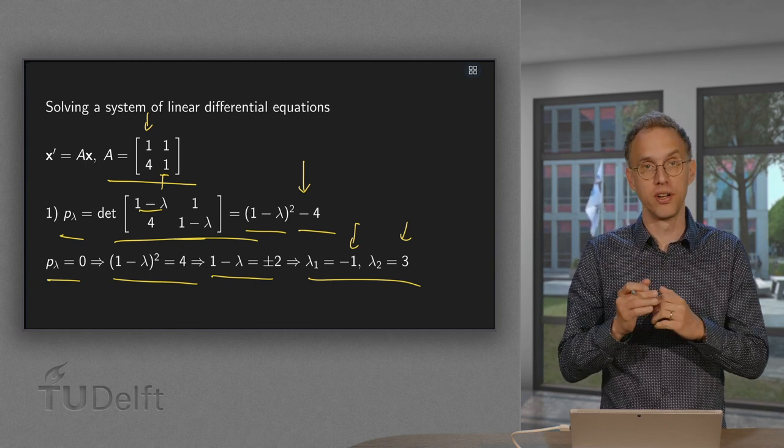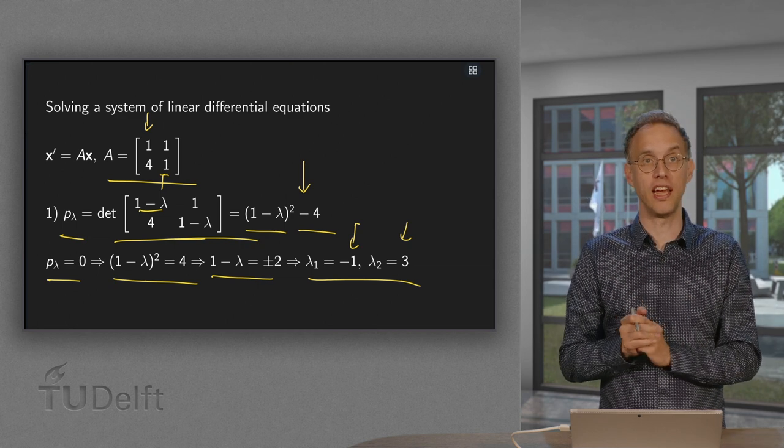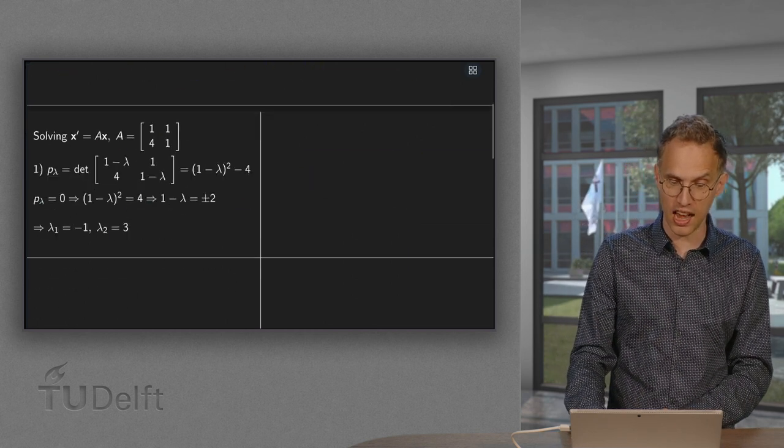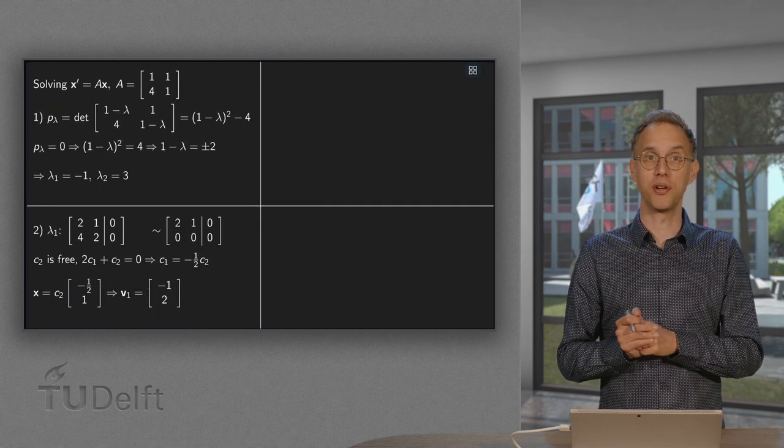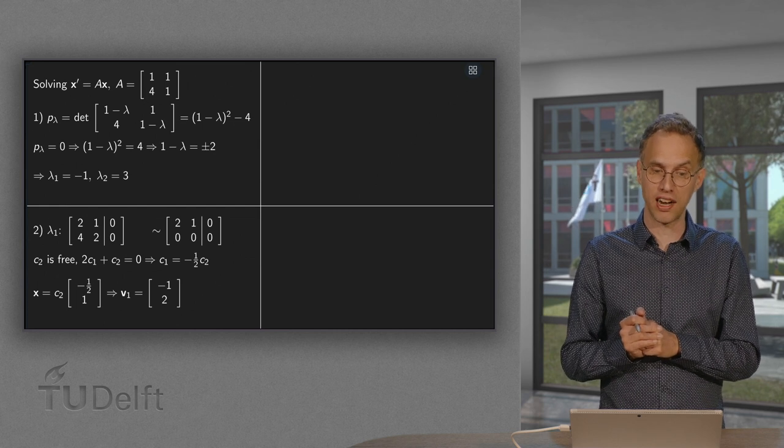And if your sum of your eigenvalues is not equal to the trace of A, you have made a mistake in the eigenvalues. Correct the mistake then. Because otherwise you will get a problem in the second step, the eigenvectors.